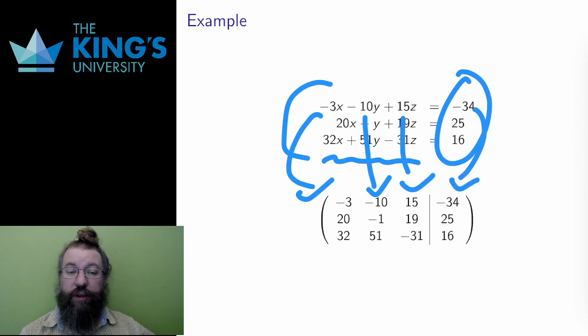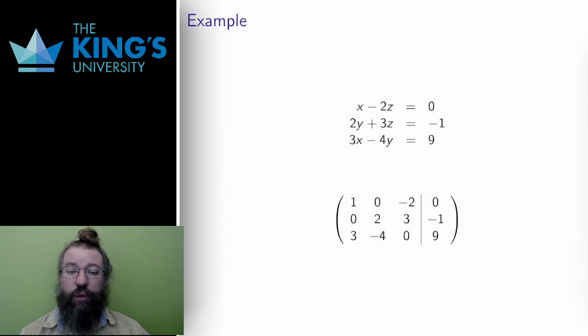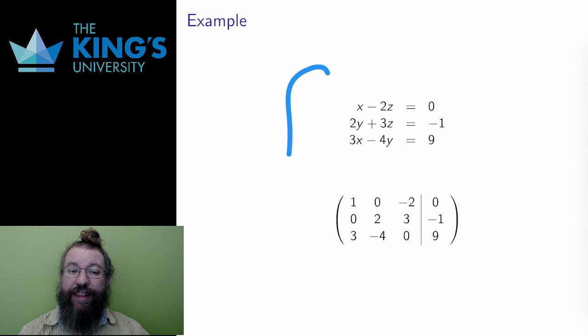Finally, one more example. Again, with three equations and three variables. This one is slightly tricky. In the first equation, y doesn't show up. Well, that's the same though as y multiplied by 0.